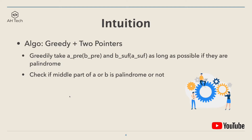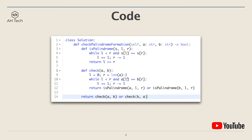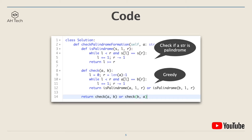The code is pretty short and clean. There are three parts: the first is a utility function to check if a string is a palindrome. The second is the greedy two-pointer algorithm — we define a left and right pointer, and while left is smaller than right and the characters in A and B are the same, we keep moving the pointers. When the characters are not the same, we check if the middle part of A or B is a palindrome.